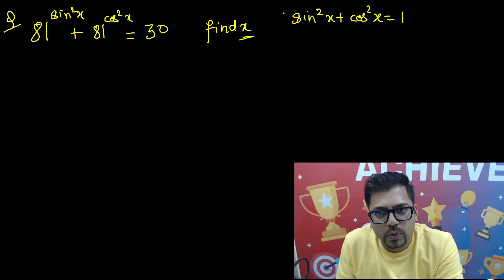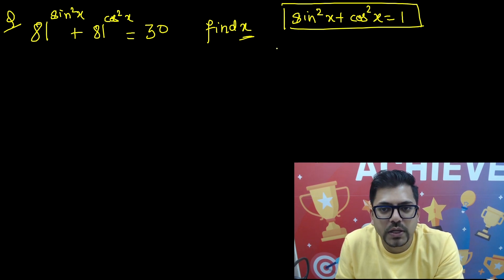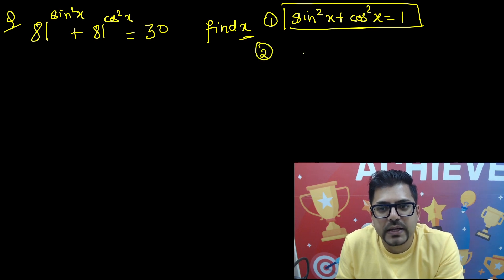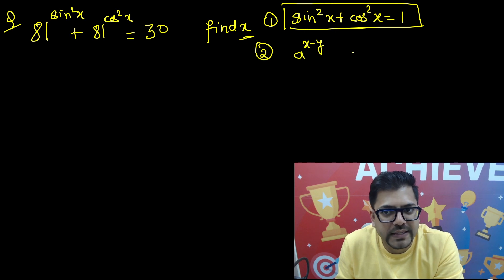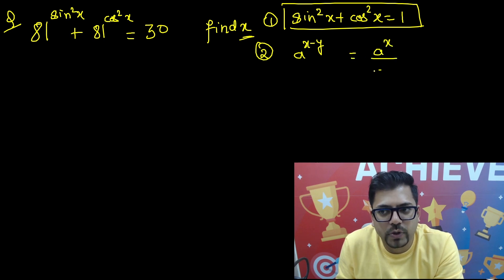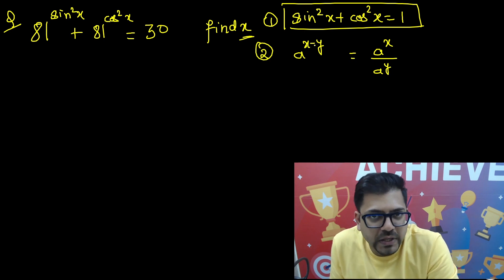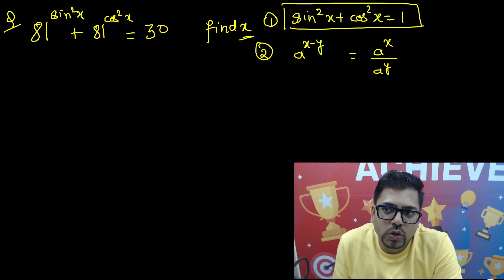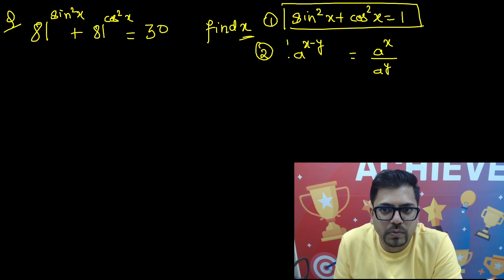The second formula you need to remember is the exponent rule: a raised to power (x minus y) can be written as a raised to power x divided by a raised to power y. So if there is a negative difference in the power, that power gets moved to the denominator. These two formulas are required for solving this question.